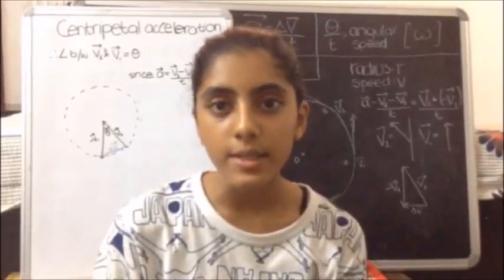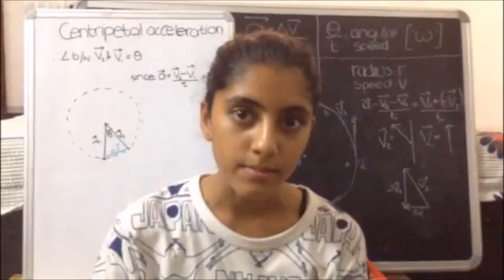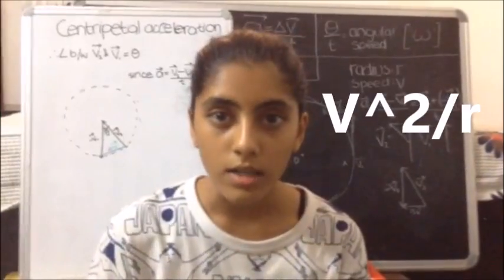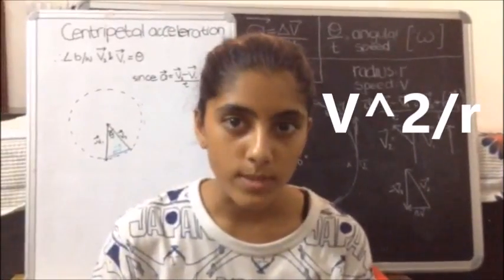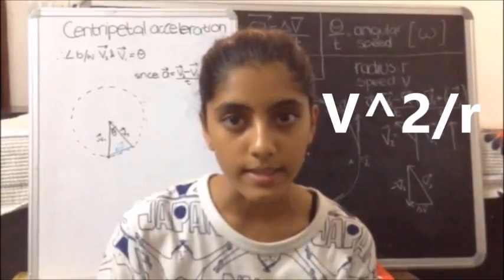The formula for finding centripetal acceleration is simple. V squared upon R, where V is the speed of the object and R is the radius of the path traversed by it.